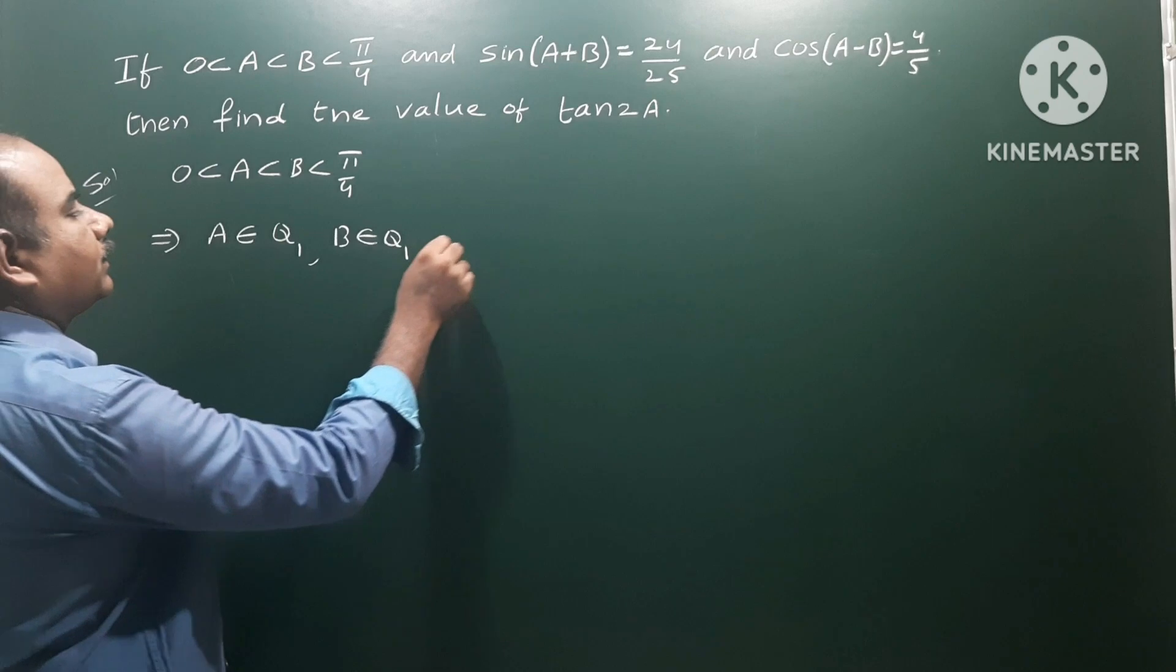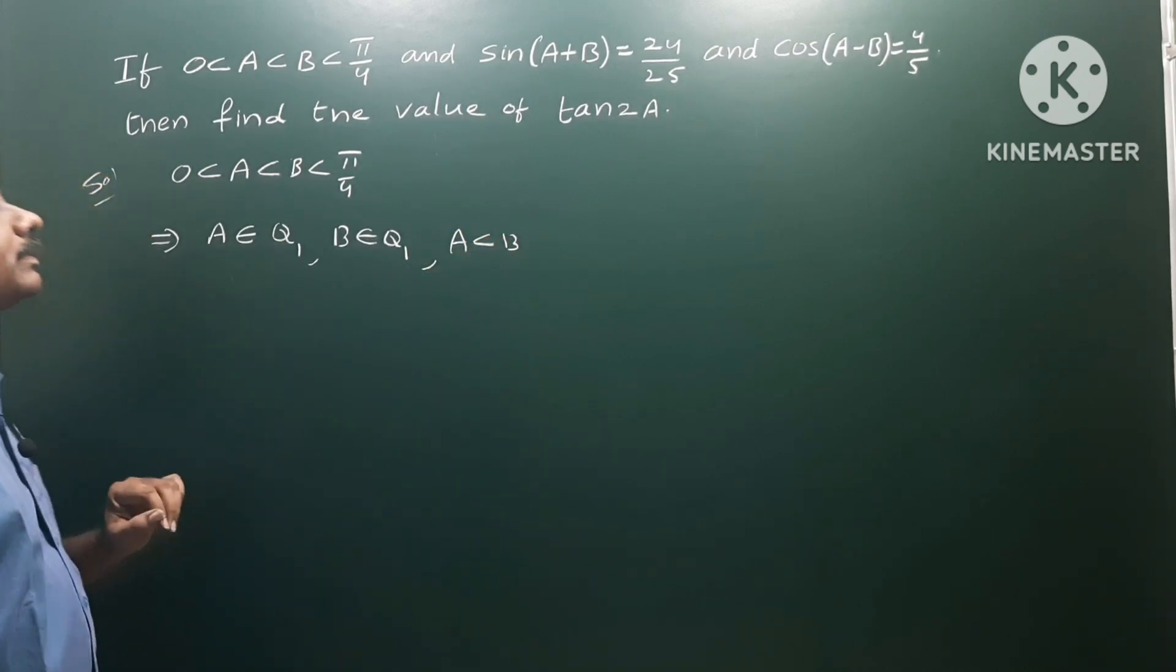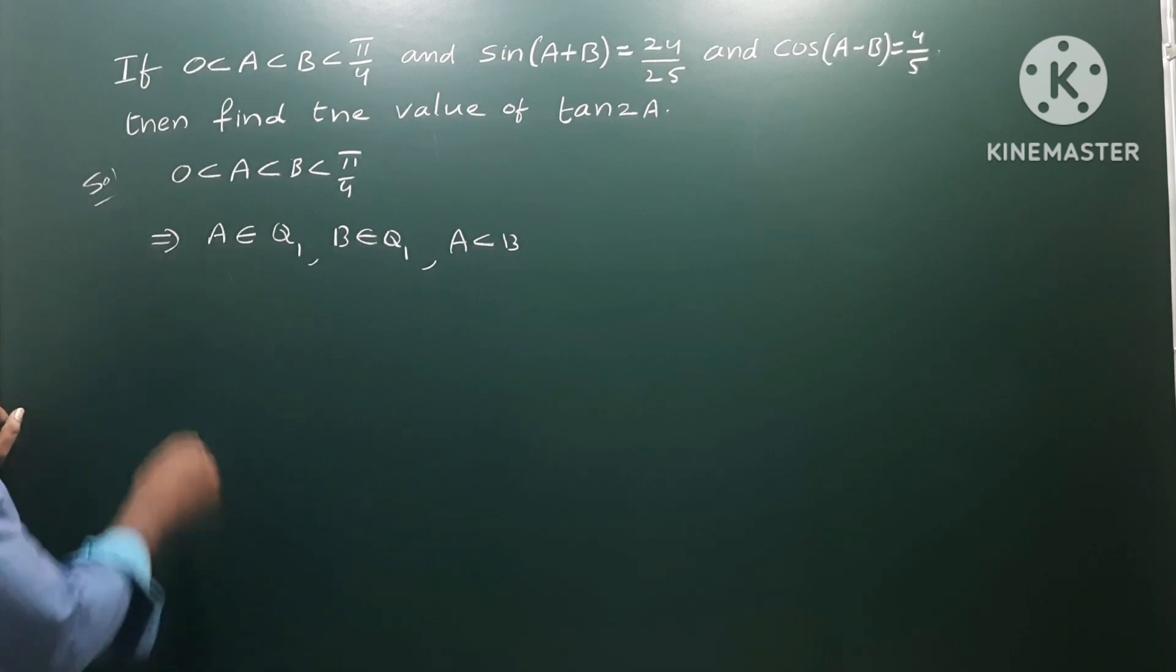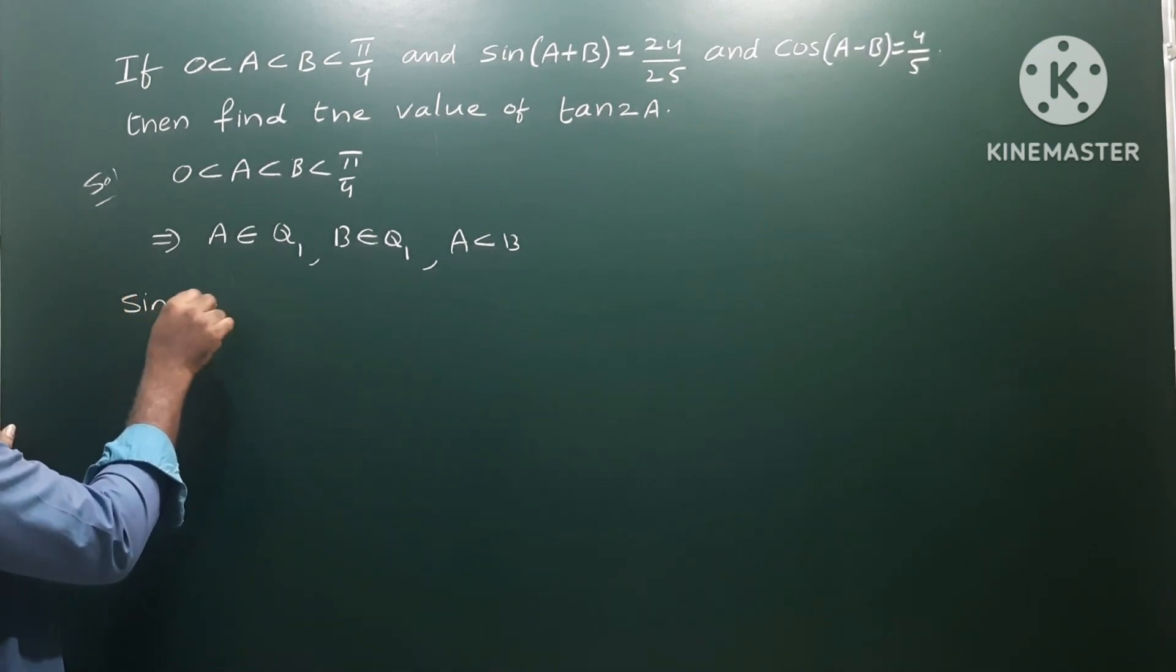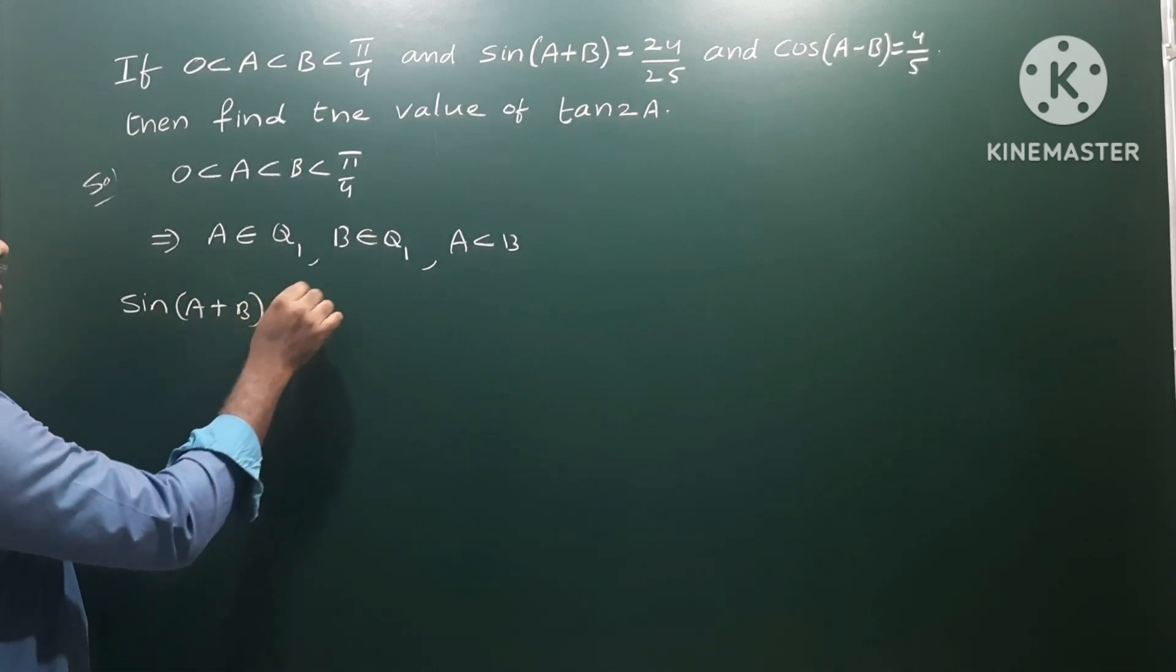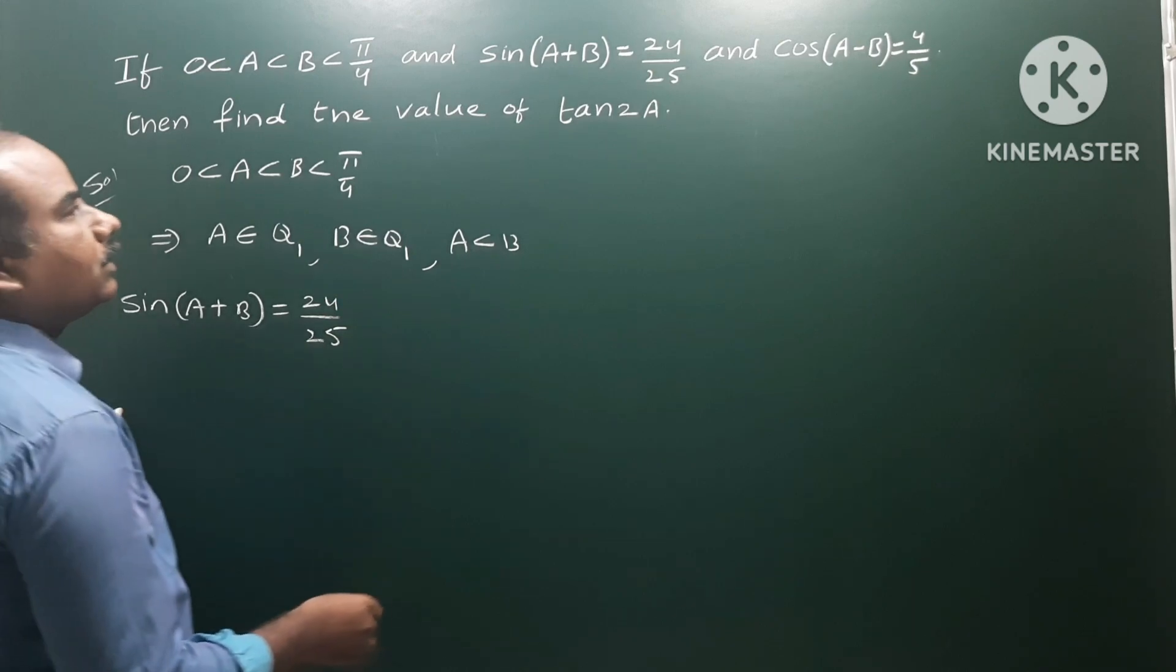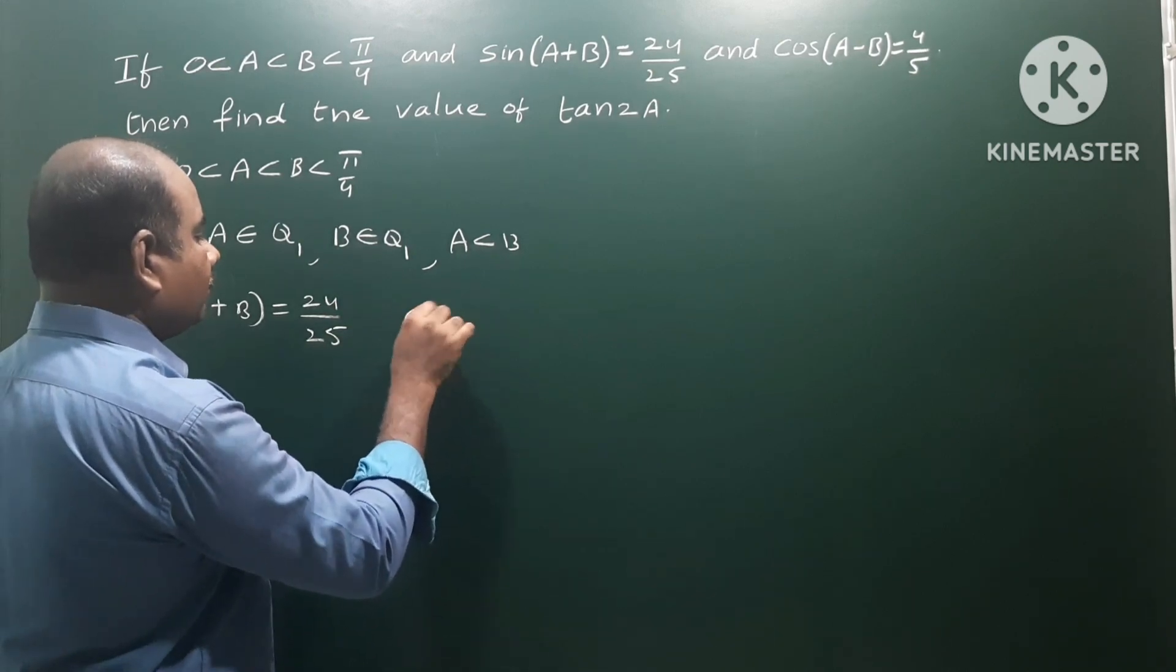The given values are: sin(A+B) = 24/25 and cos(A-B) = 4/5.